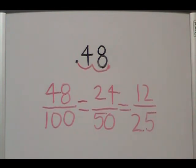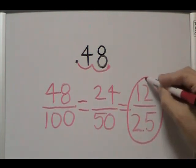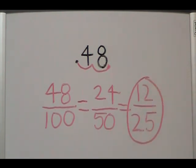The fraction is now in its simplest terms because there are no other factors that go into both 12 and 25. So our final answer is going to be 12/25.